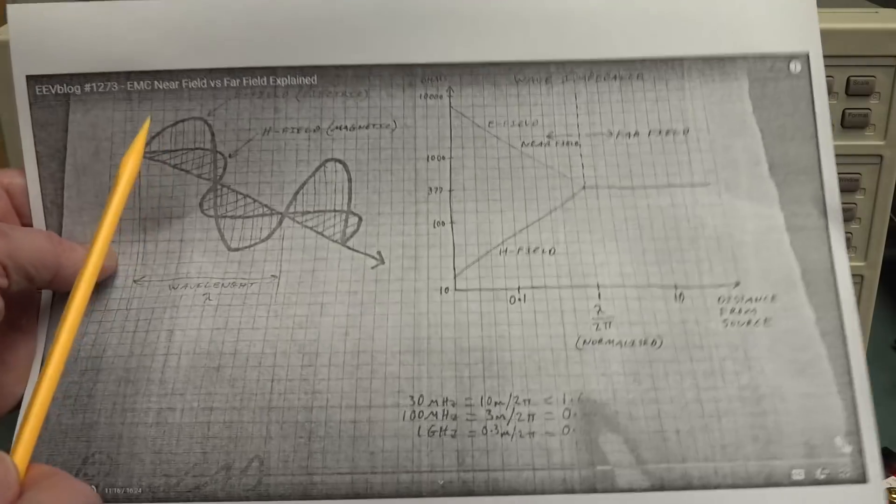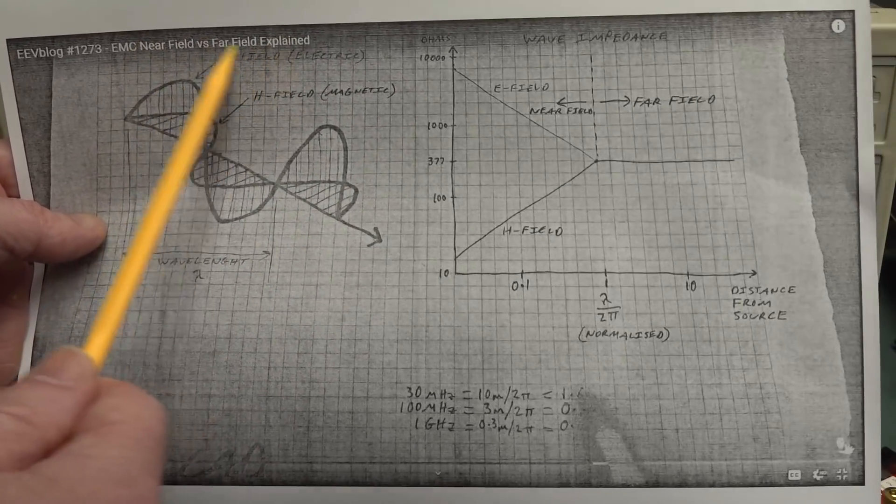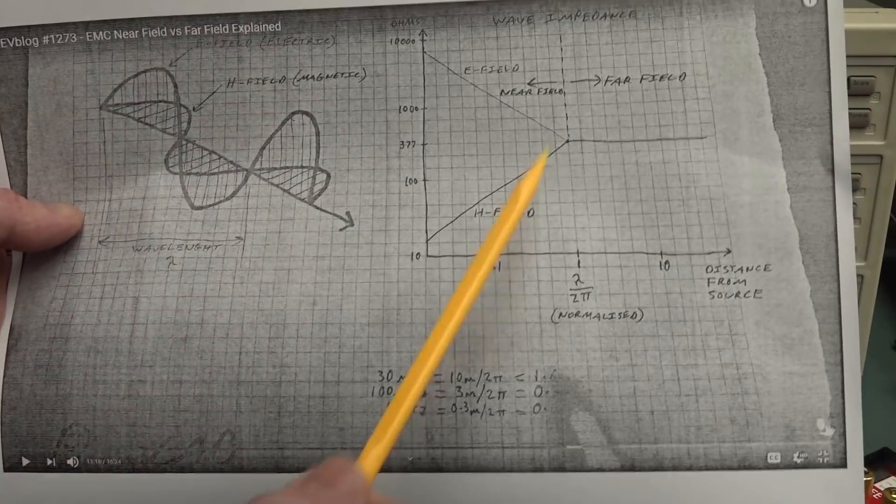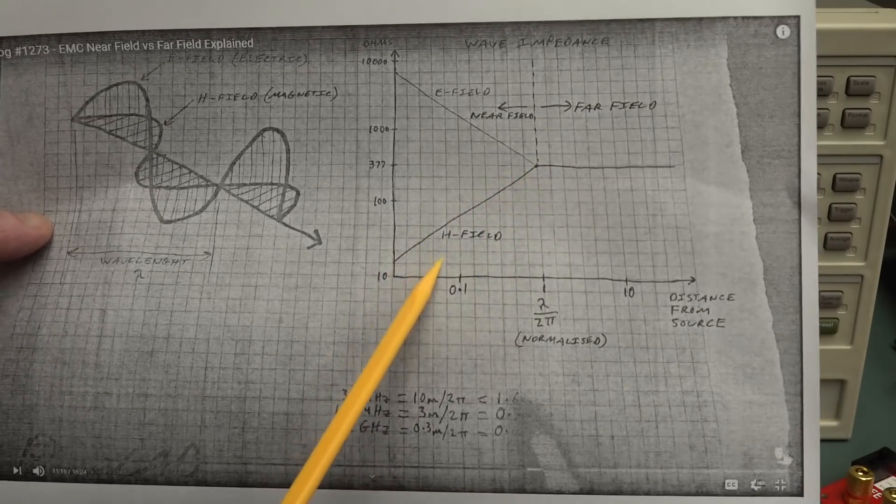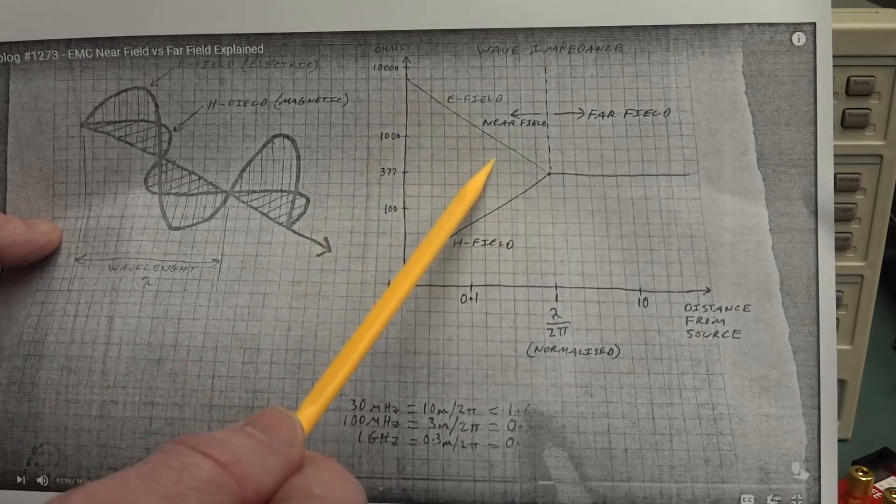Number 1273, linked in down below at the end if you haven't seen it, where I explain near field versus far field EMC. And how there are both H field, which is a magnetic field, and the E field, which is the electric field.